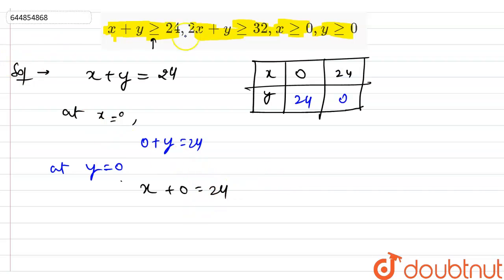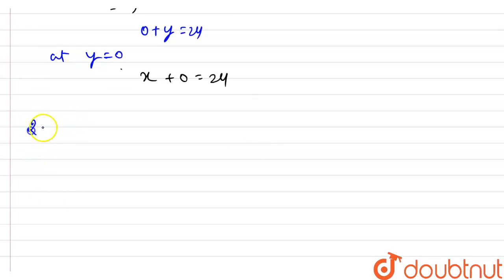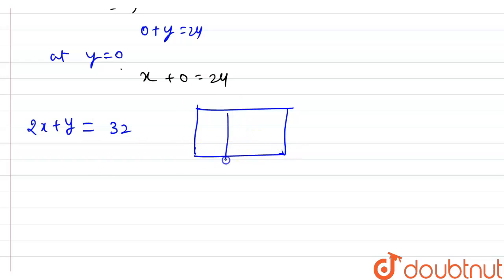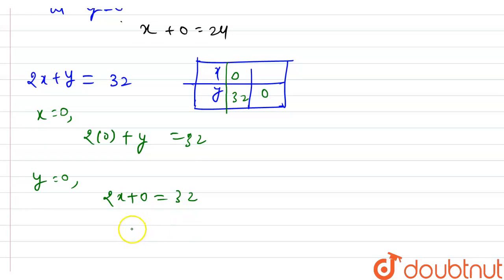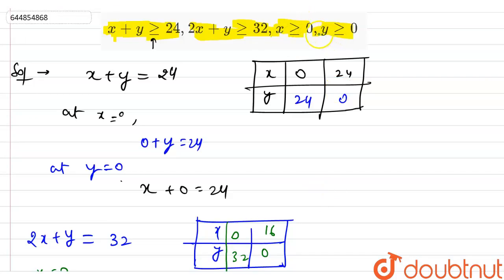Now I'm going to solve my second equation, which is 2x plus y greater than equals to 32. For solving purpose, I'm assuming it equals to 32. When x equals to zero: zero plus y equals to 32, so y equals to 32. Putting y equals to zero: 2x equals to 32, so x equals to 16. So the coordinates are (0, 32) and (16, 0).